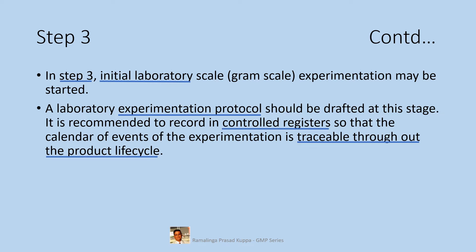All the details should be recorded in a controlled register for establishing the traceability of the calendar of events. At every point of time, along with the reaction scheme, all physical changes in the process should be recorded. Examples include dissolution pattern of the input materials, color and clarity of reaction mass, texture and color of the reaction mass, any frothing, or any such observations. Pattern of temperature rise, reflux, etc. also should be noted. Outputs at different stages in process monitoring should be captured as and when the process progresses.